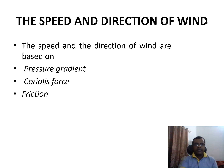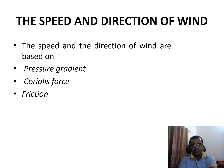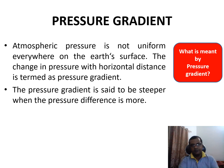The speed and direction of wind are based on three factors: pressure gradient, Coriolis force, and friction. The first one is the pressure gradient. What is meant by pressure gradient?